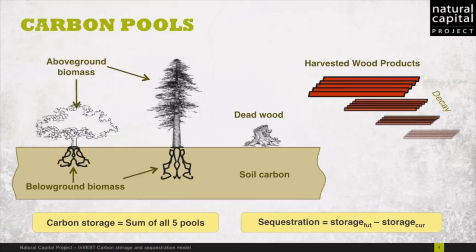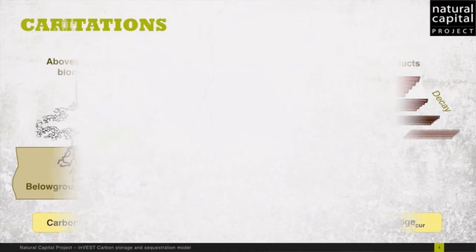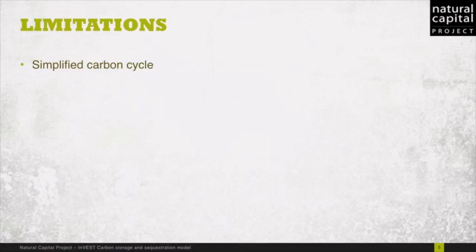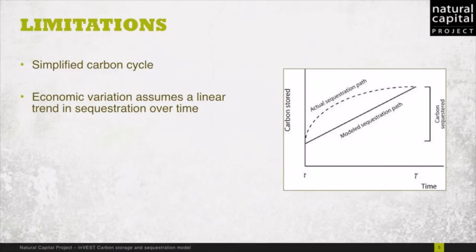Because this model is simple, it has several limitations. First, the carbon cycle is very simplified — it does not take into account growth rates, climate, or other dynamic factors that influence the carbon cycle. The economic valuation assumes that carbon is sequestered linearly over time, when it is often the case that the actual sequestration path is non-linear.